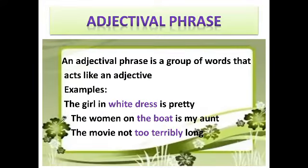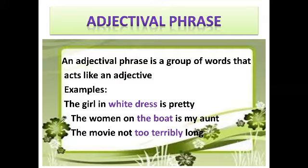Next, we have an adjective phrase. An adjective phrase is a group of words that acts like an adjective. Examples: the girl in white dress is pretty. The woman on the boat is my aunt. The movie is not too terribly long. The colored portions in these sentences are all adjectival phrases.